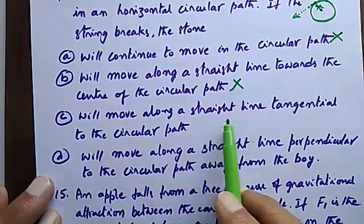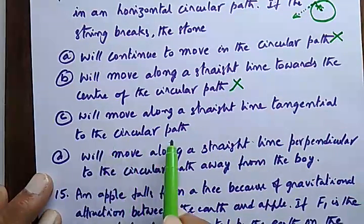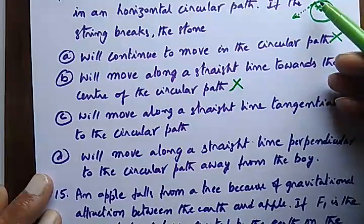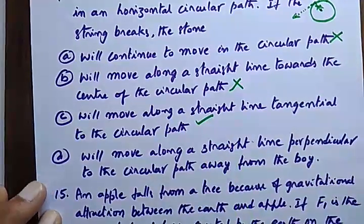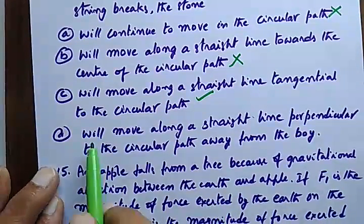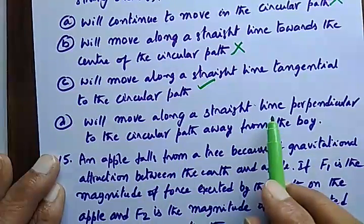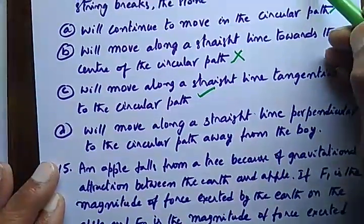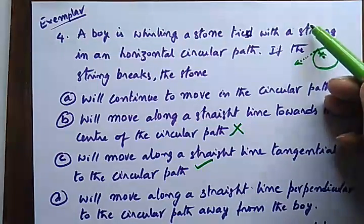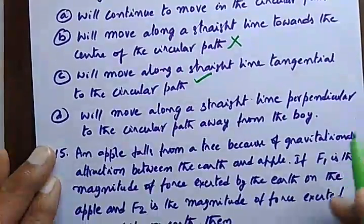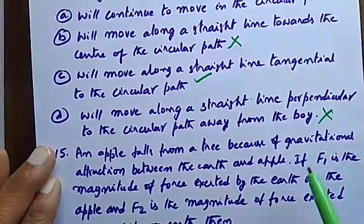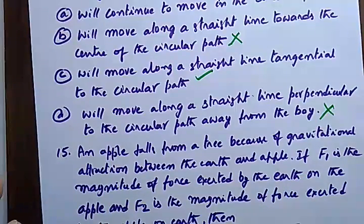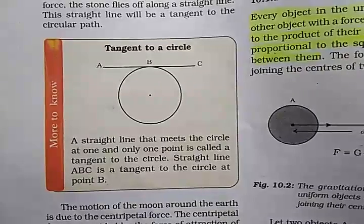Option C: it will move along a straight line tangential to the circular path — yes, that is correct. Option D: it will move along a straight line perpendicular to the circular path away from the boy — that is also wrong. So the correct answer is C.